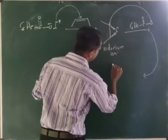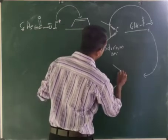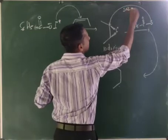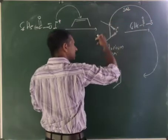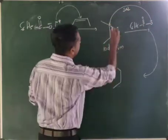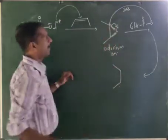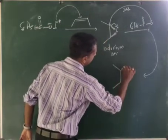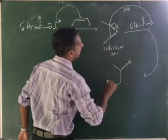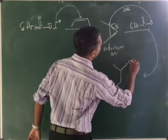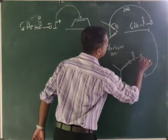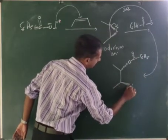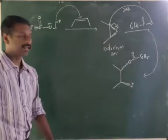Since the benzoate is attacking from the back side (like SN2), the C–I bond shifts toward I⁺. We represent this back-side bond with a dotted line, giving a structure where the benzoate is on one face and iodine (I) is on the other, with the formula showing C(=O)-C6H5 and I on the intermediate.